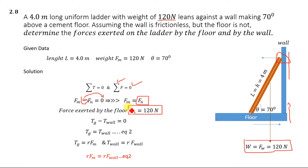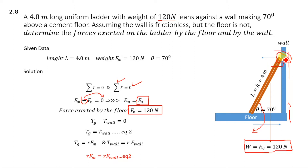This normal force of 120 Newton is the first force we've calculated — the force acting on the ladder from the floor. For the force from the wall, we use the second condition of equilibrium: the sum of all torques equals zero. There are two torques — one clockwise due to the weight of the ladder, and one counter-clockwise due to the force from the wall.